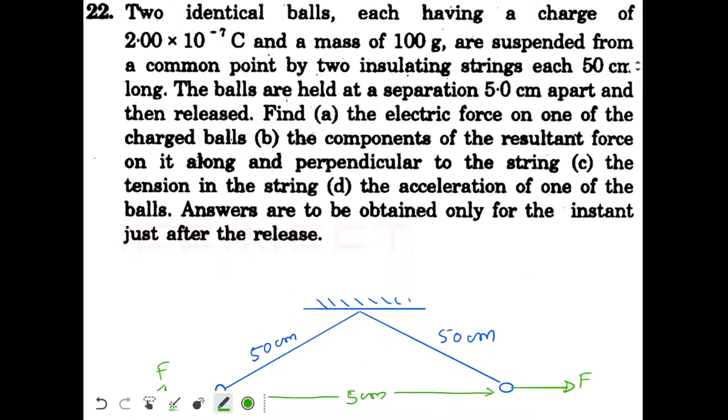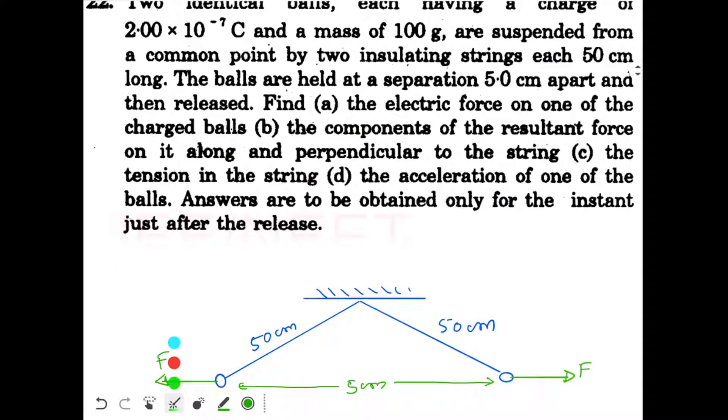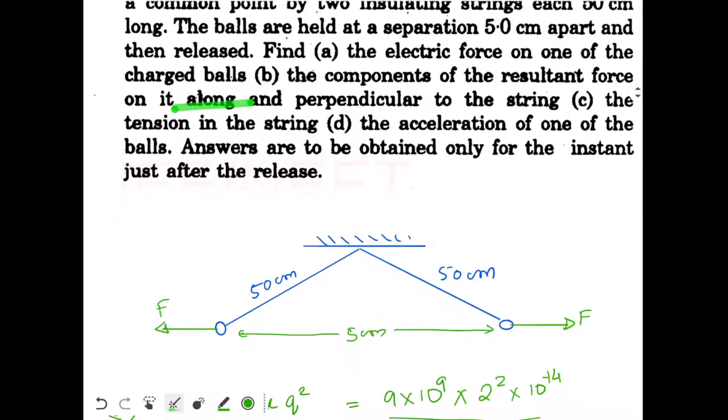Now the question is asking the components of the resultant force on it along and perpendicular to the string. Along the string, the string cannot stretch so the mass cannot really move along this direction. It will follow a circular path with a constant radius. So along the string net force should be 0. What about perpendicular to the string, that we need to find out.